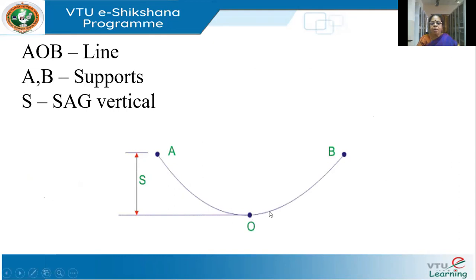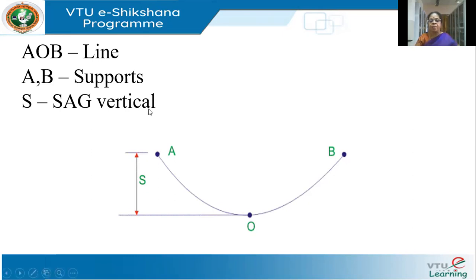If I stretch the conductor tightly between A and B it is likely to snap because of excessive tension, so I slightly loosen it. Because of that it will sag. Now this is a very exaggerated picture — it doesn't become a bowl like this and sag so much. There will be a small sag, and we will see how much it will sag.